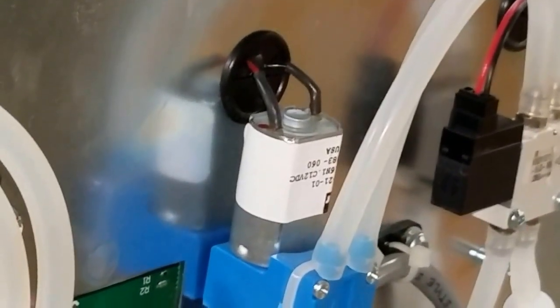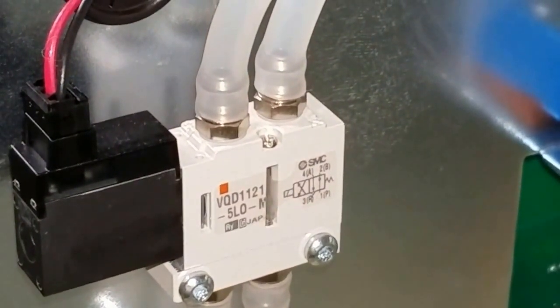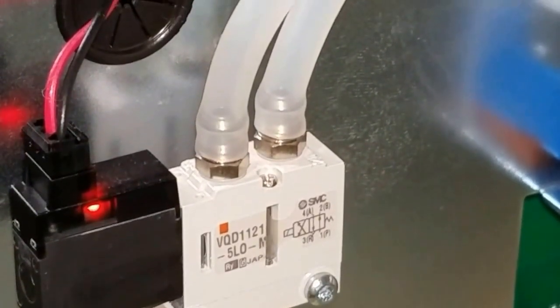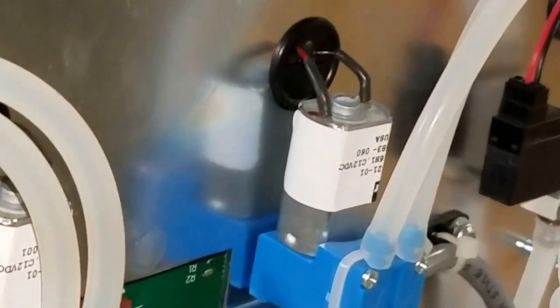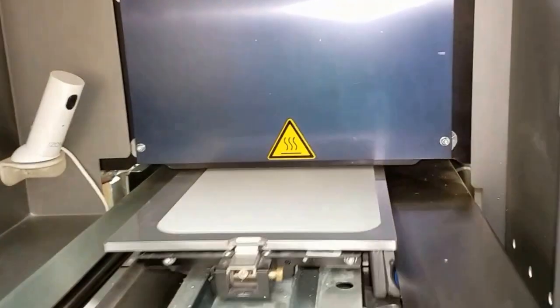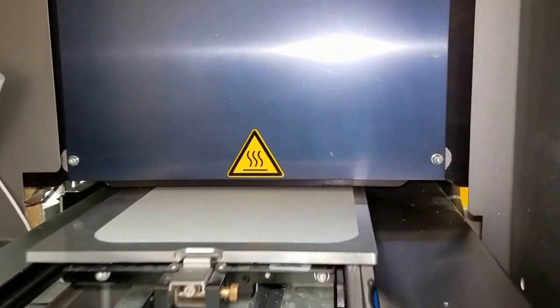But for some reason it's doing the material side when it should be doing the wax side. And I say that because the print that we're doing is just a large flat area. And this is the support material. So it's using a lot of wax.